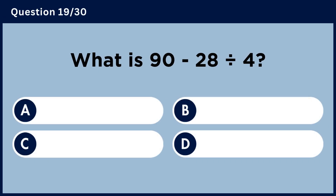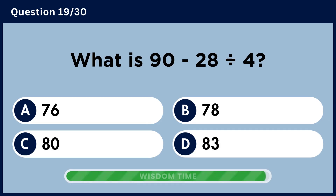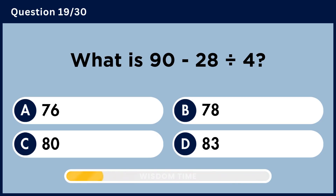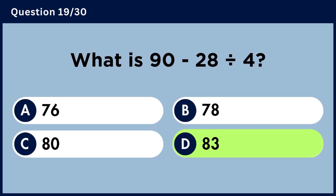What is 90 minus 28 divided by 4? Answer D, 18.